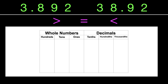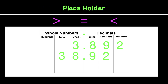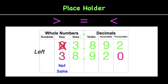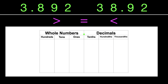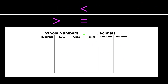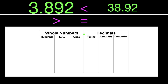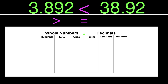Let's try another one: three and 892 thousandths compared with 38 and 92 hundredths. They look very similar, but pay attention to that decimal point. Notice that when we line up our decimal point, there are some gaps on the top and bottom — put in a placeholder. Zero is the number that represents nothing in math, so that's called a placeholder. Working from the left, right away in the tens place we see three and zero — they are not the same. The three is greater, therefore the bottom number is our greater number. This reads: three and 892 thousandths is less than 38 and 92 hundredths.